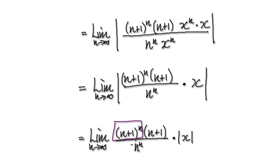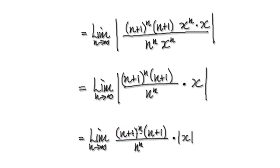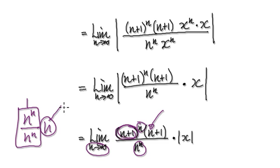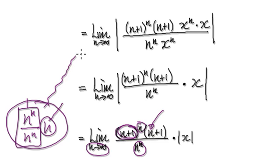Looking at this block here: as n heads towards infinity, n+1 will act as n. So what you've got here, as n heads towards infinity, n+1 acts as n, and then you've got your term to the power of n. But the thing is, you've got an extra piece of n here. This part is going to head towards one, but then as n heads towards infinity, this is just going to get bigger and bigger. So the whole thing will just get bigger and bigger as n heads towards infinity.